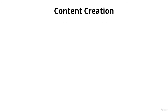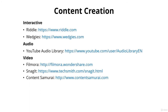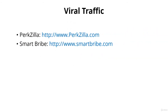And then there's content creation. For interactive content you can use Riddle.com or Wedgies.com. For audio content creation you can use the YouTube Audio Library. For video content creation check out Filmora, Snagit, and Content Samurai. Finally, for viral traffic, check out SmartBribe or Perkzilla.